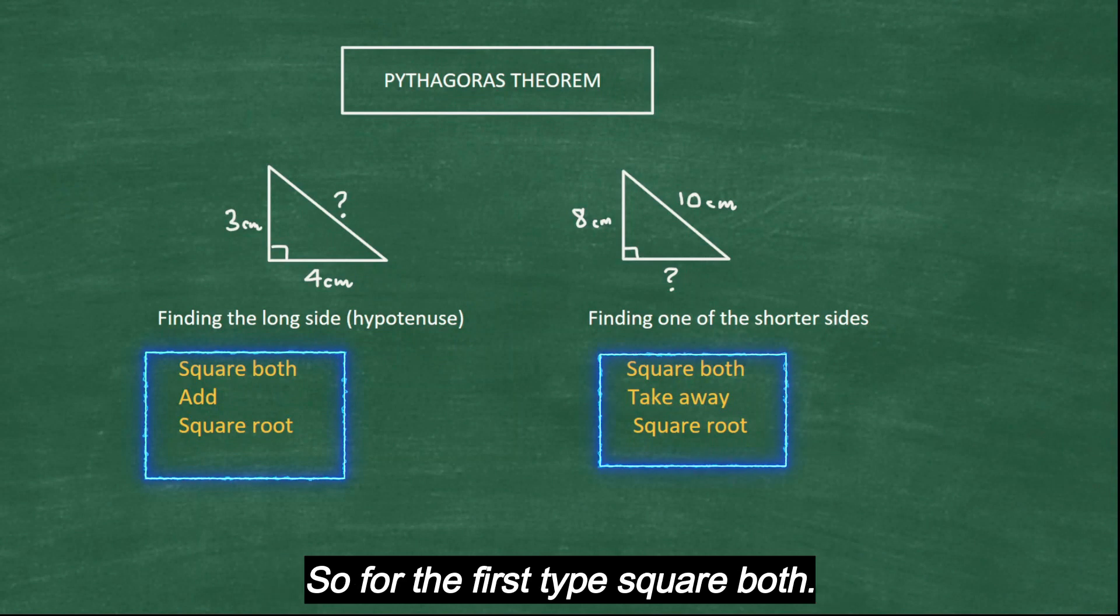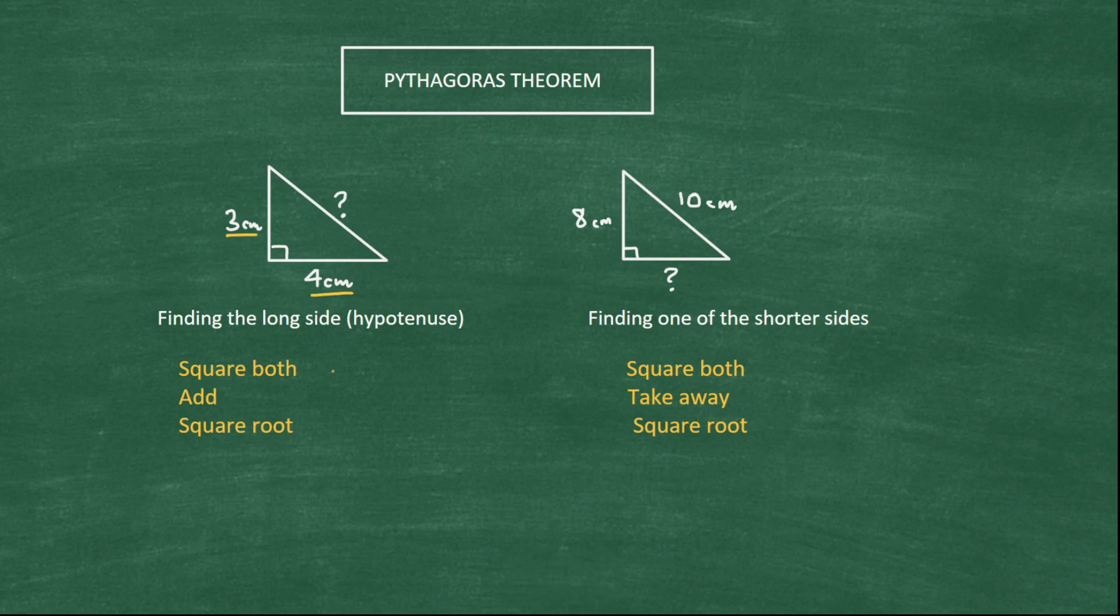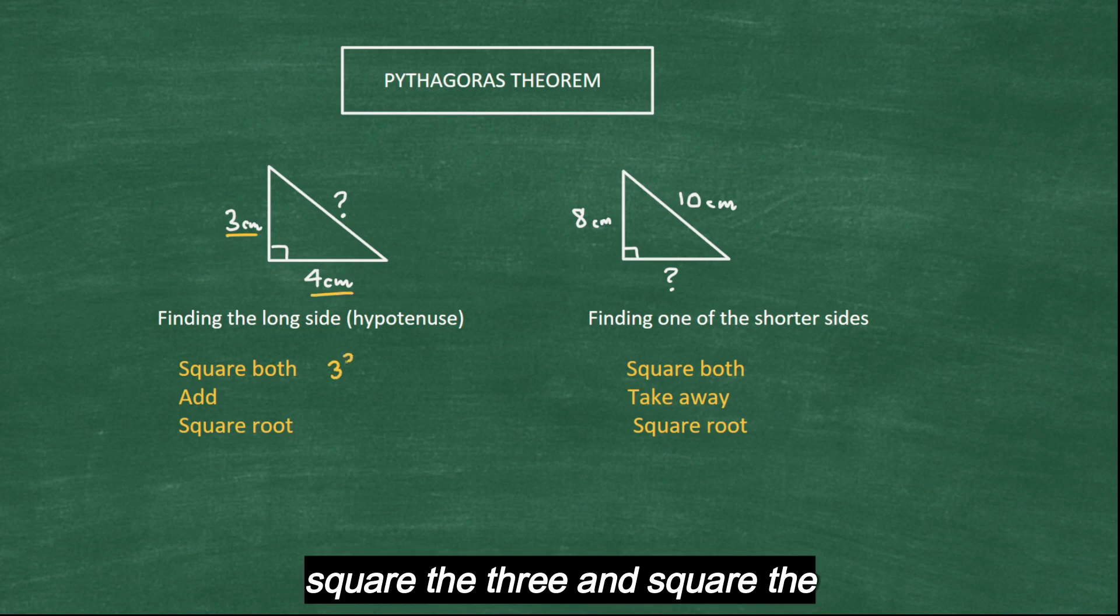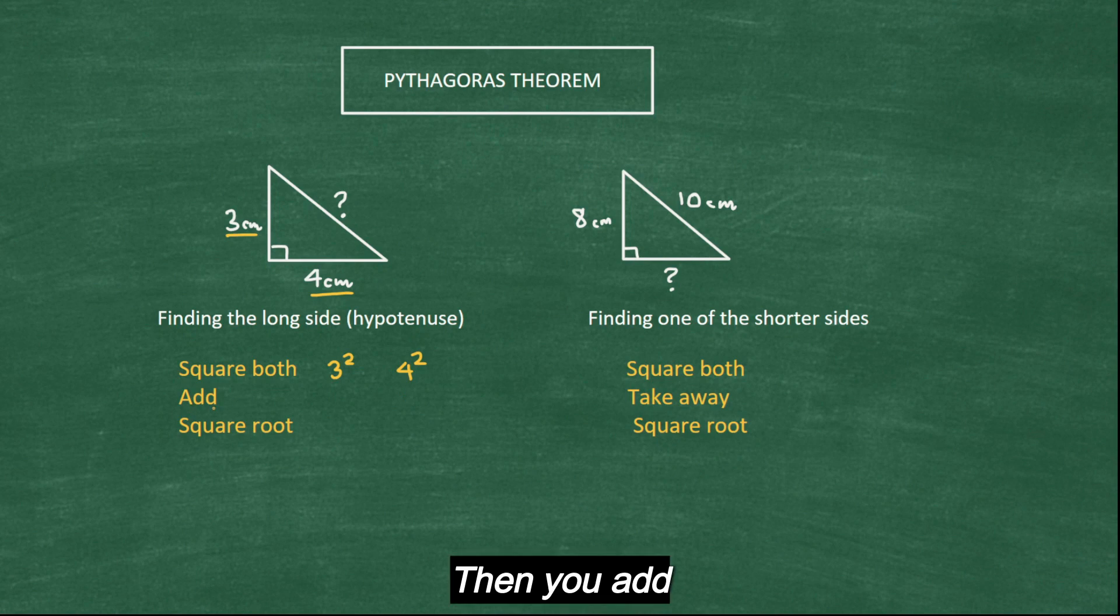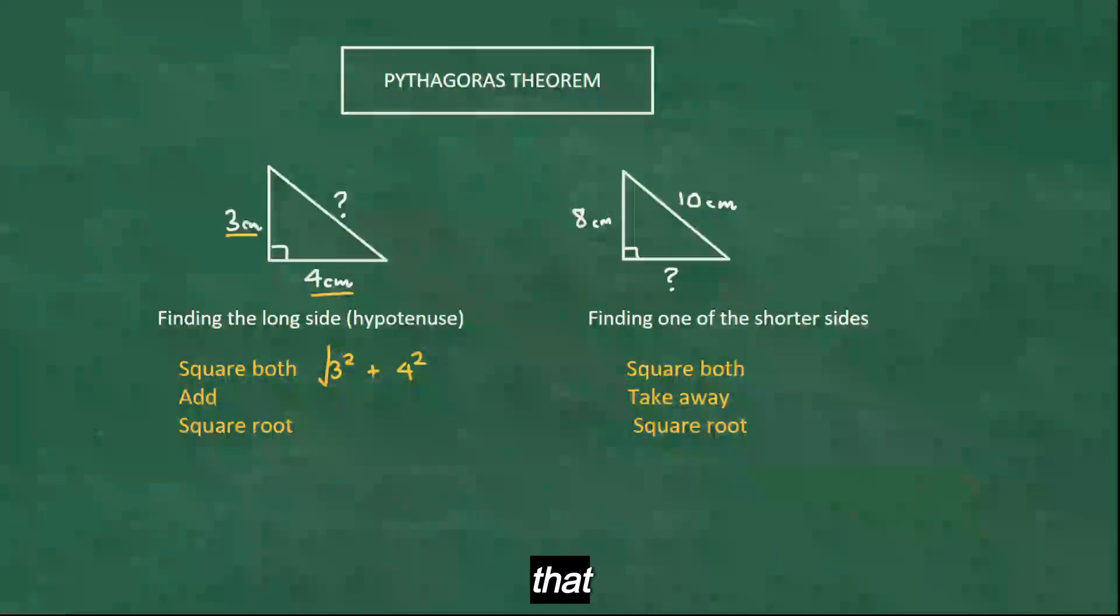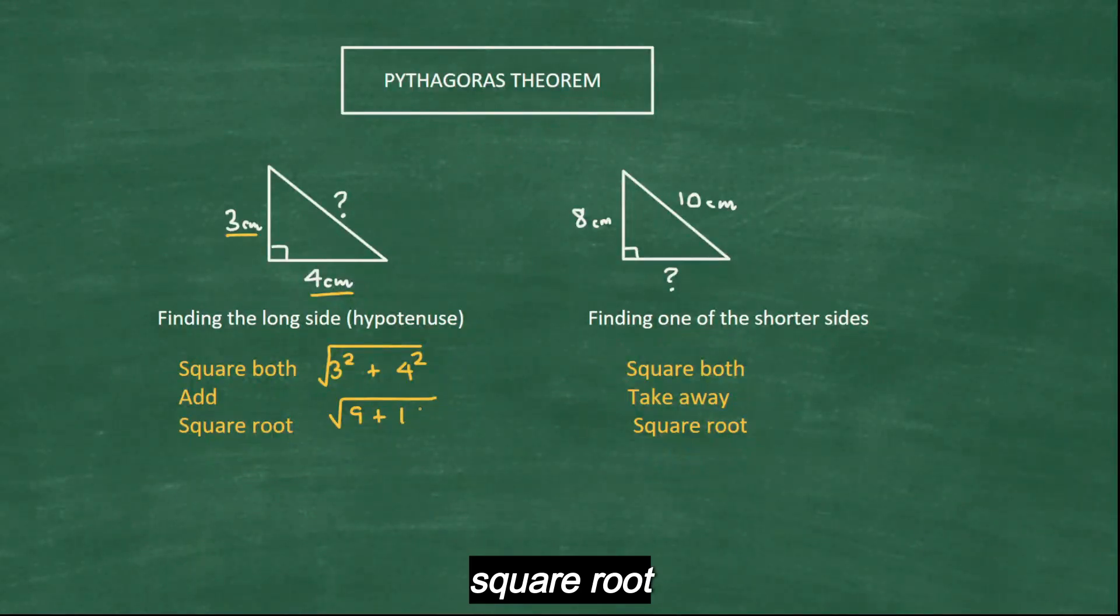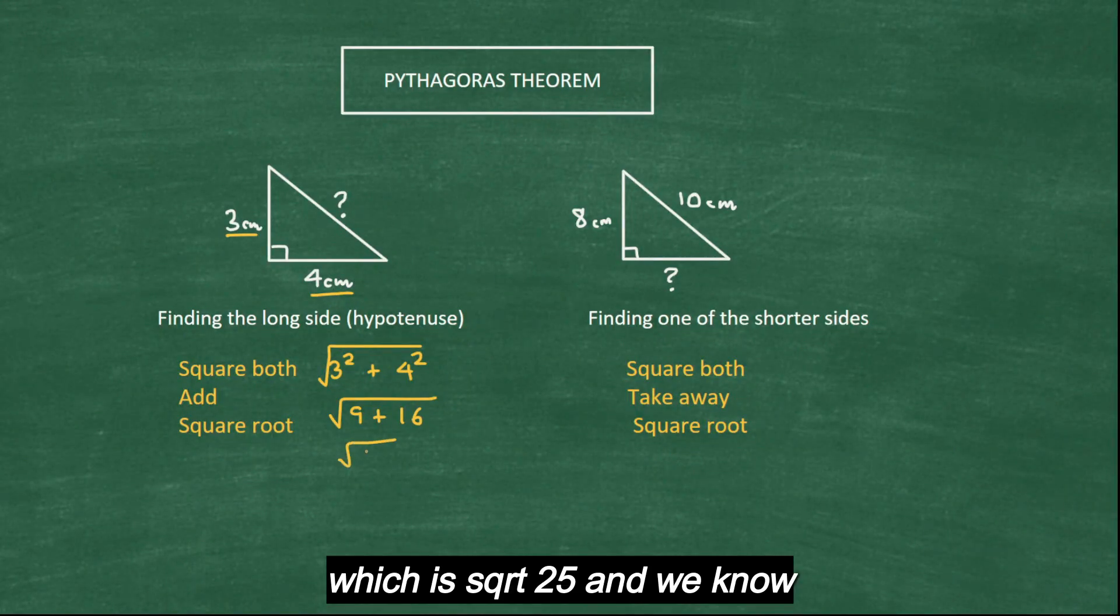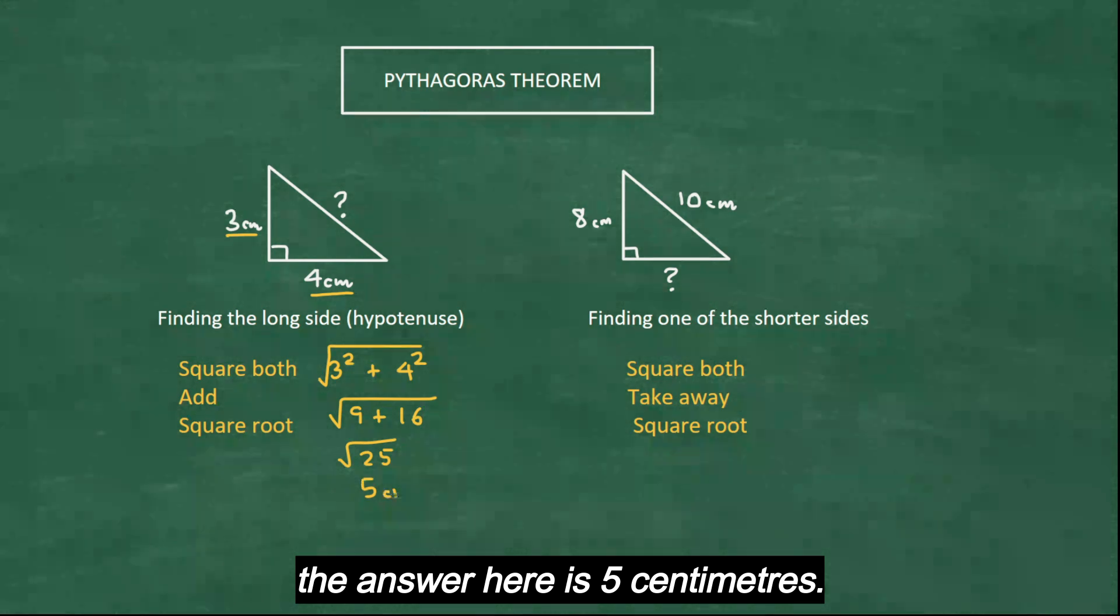So for the first type, square both. So square both numbers, 3 and 4. So square the 3 and square the 4. Then you add the two and then square root that. Now 3² is 9 add 16 square root which is √25 and we know the answer here is 5 centimeters.